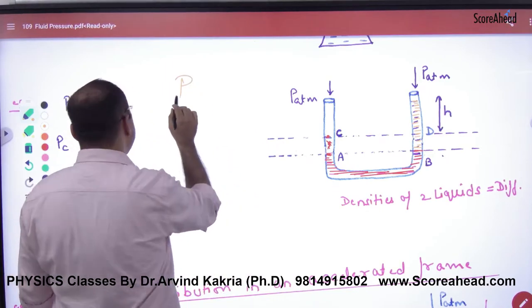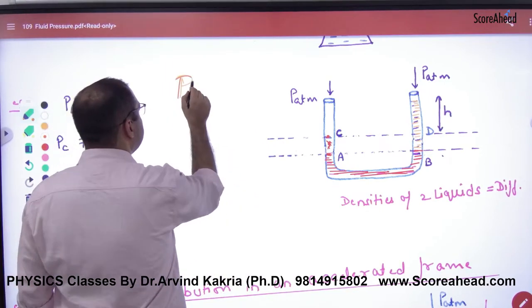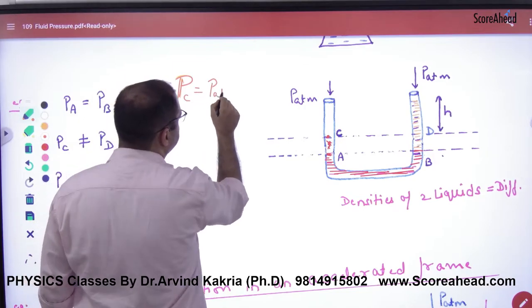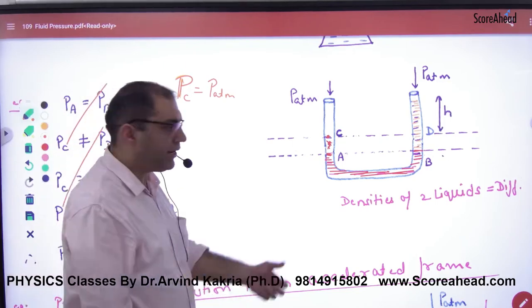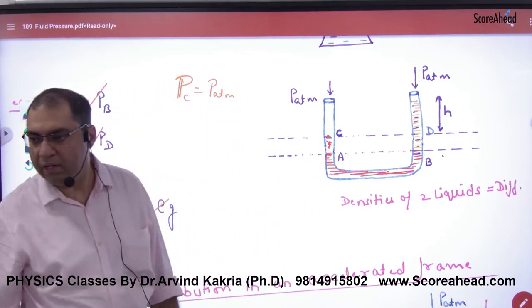So what is the pressure at point C? That will come from the theory. I cannot see this please, I am constructing it myself. So what is the pressure at point C? P atmospheric.